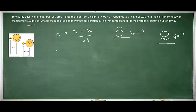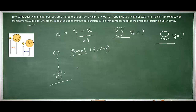In order to do that, we're going to consider the motion of the ball as it's traveling towards the ground. We can consider this phase one of the motion — the falling phase. During phase one of the motion, the initial velocity of the tennis ball was zero because it was dropped.